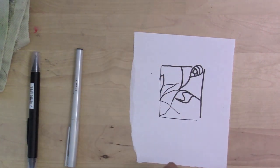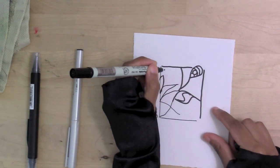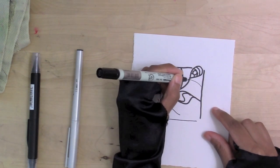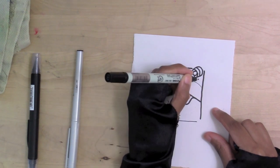What I have here is an Itoya marker, a Zig marker, and also an Elegant Rider calligraphy pen. The Zig marker actually has two sides to it.